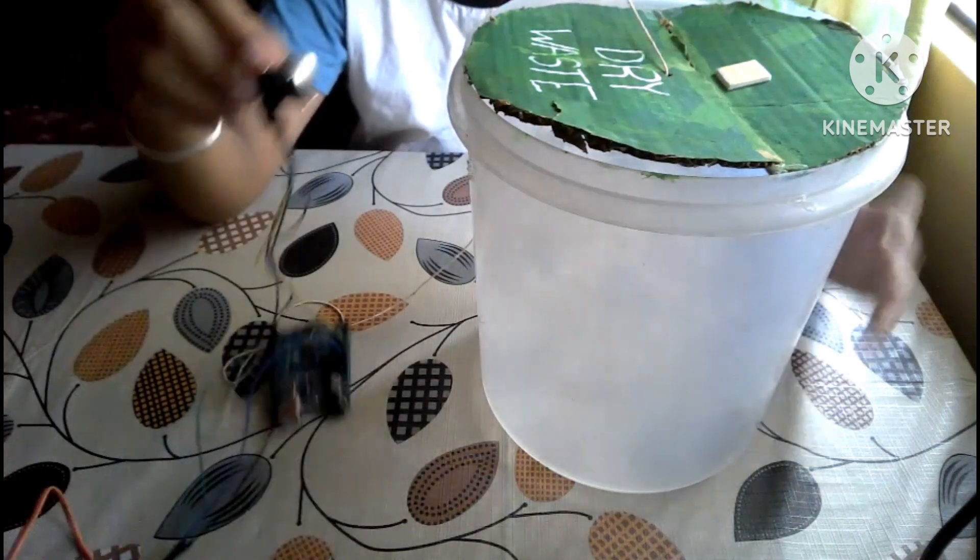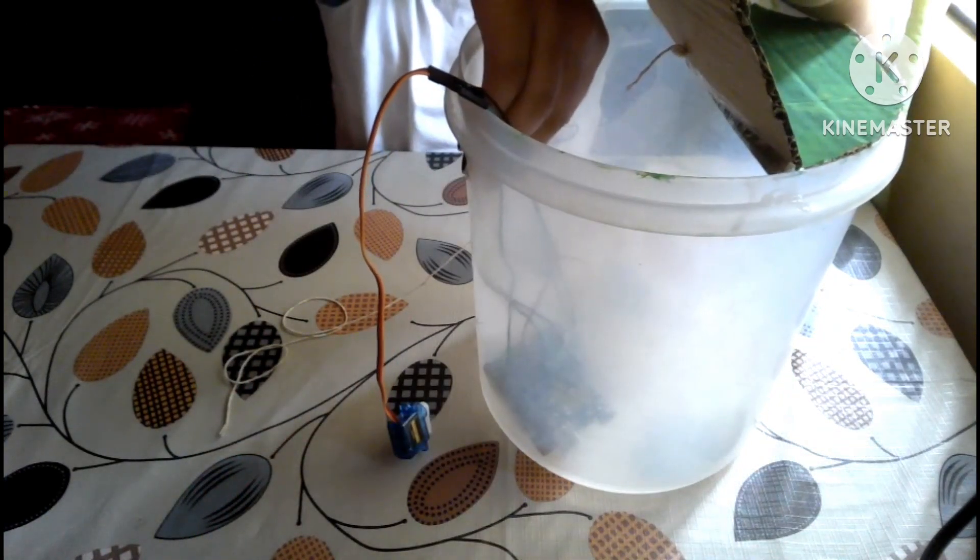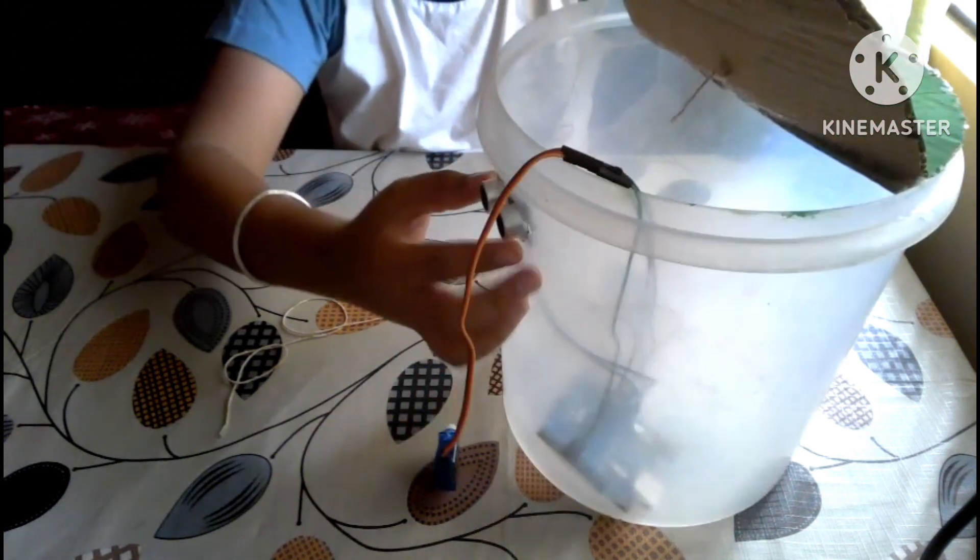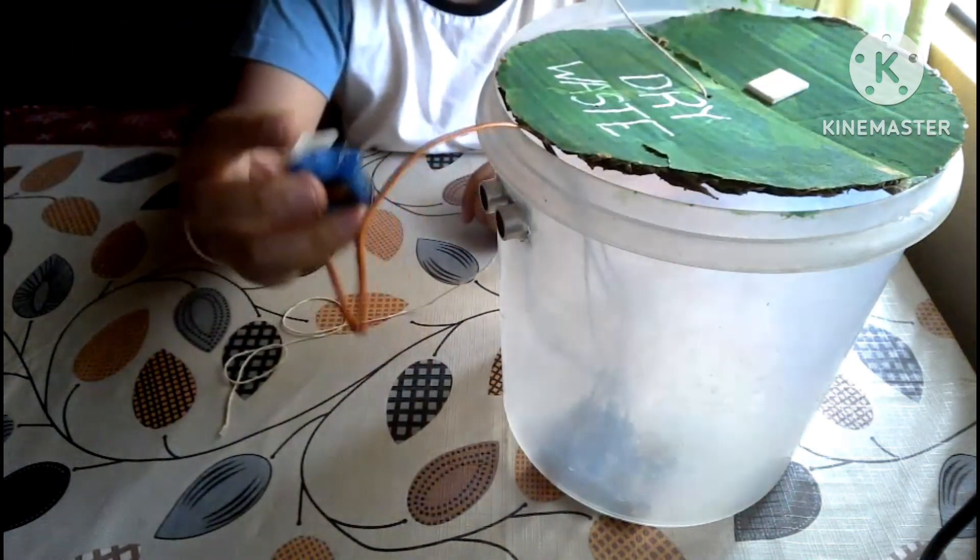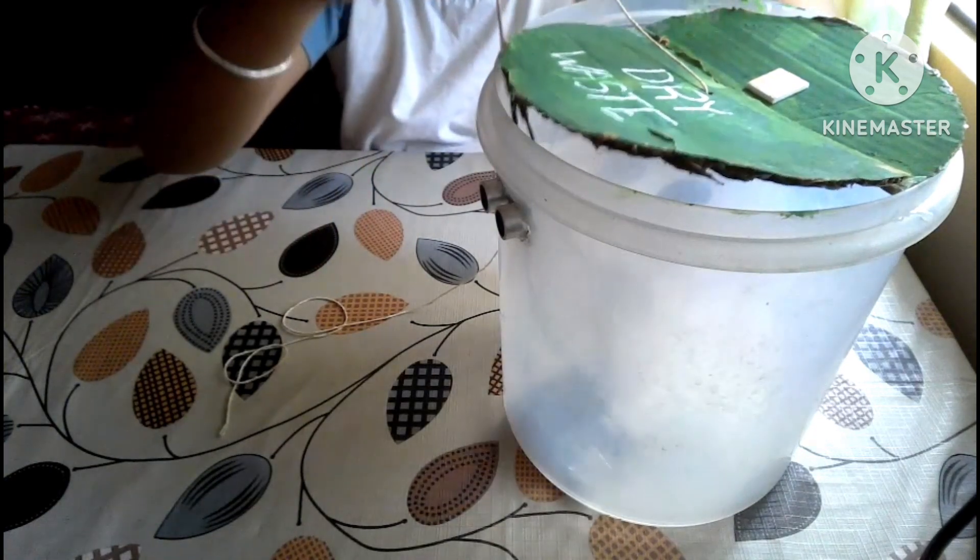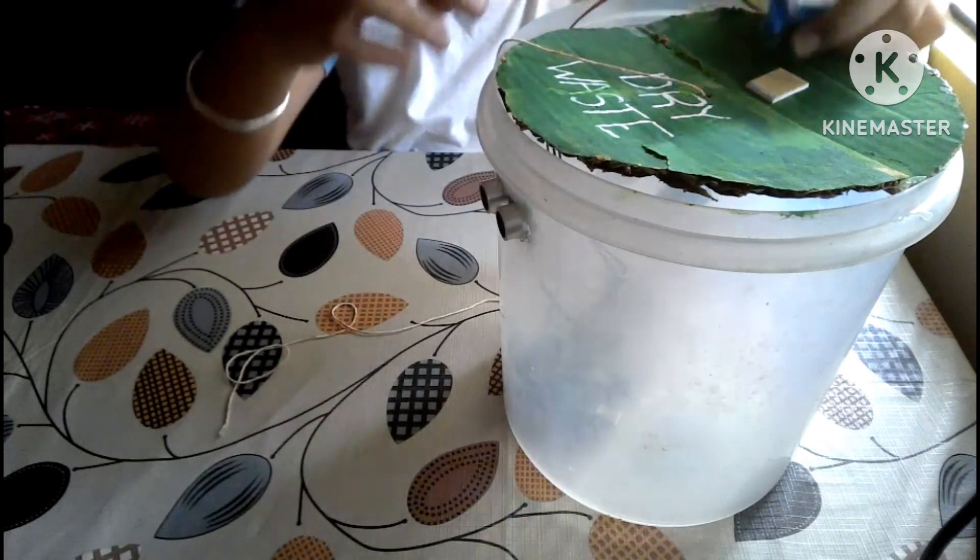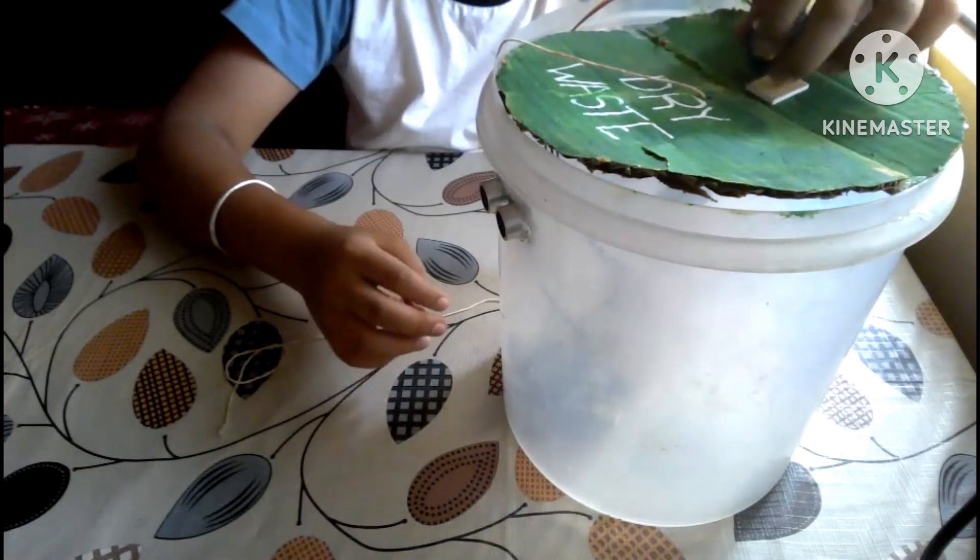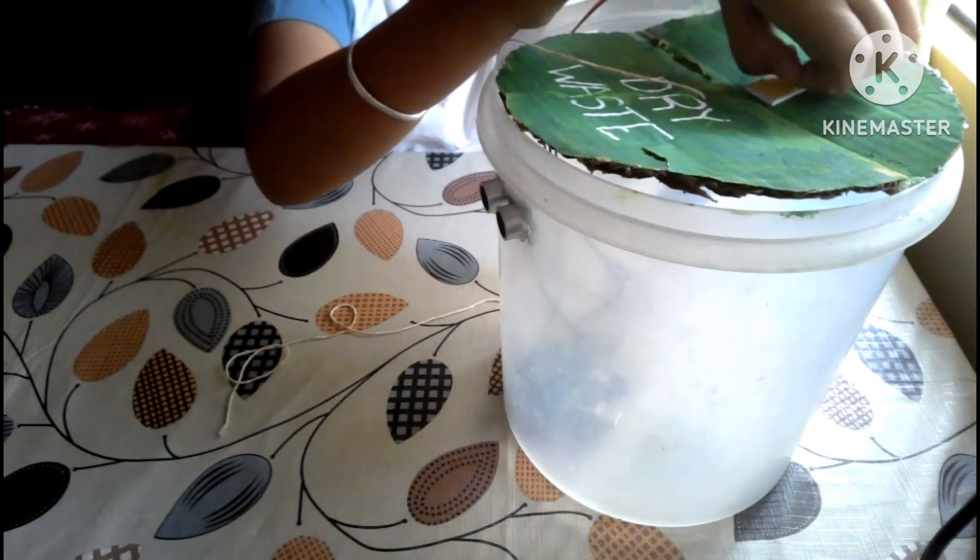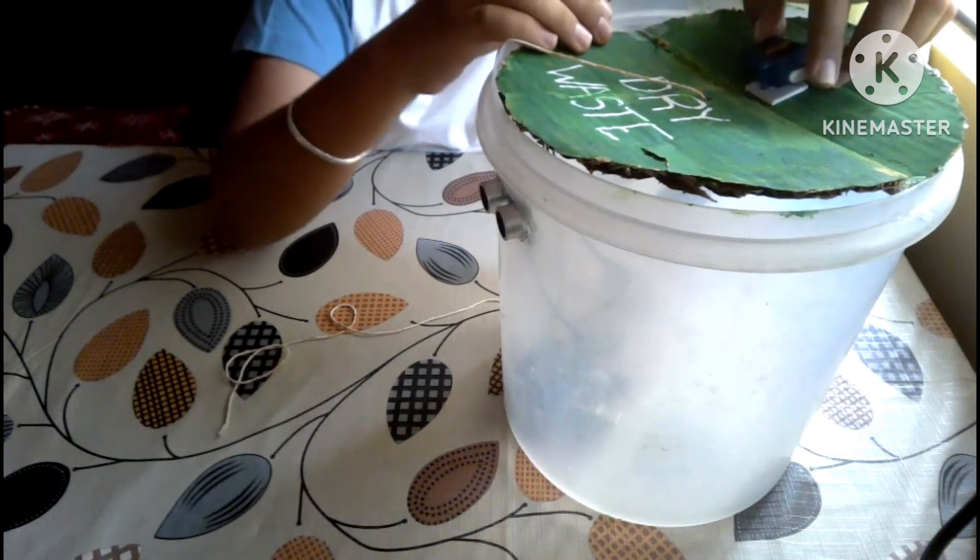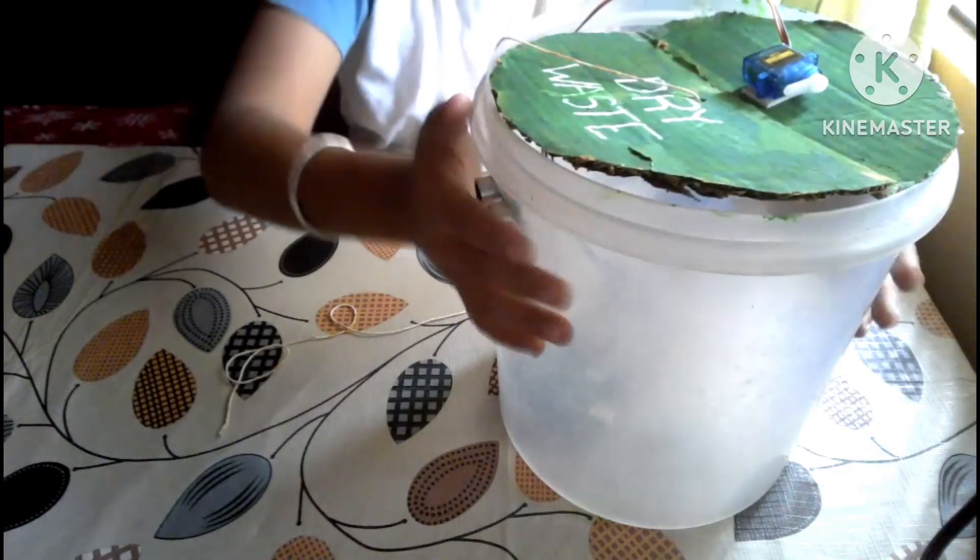Let's connect the components. Fix your ultrasonic sensor in the hole you made. Get your servo motor outside and fix it on the double-sided tape, like this.